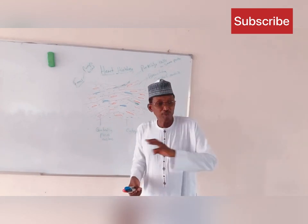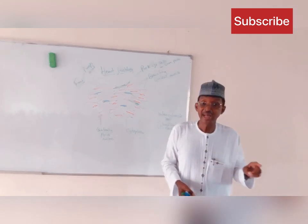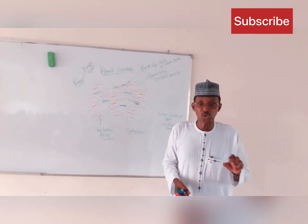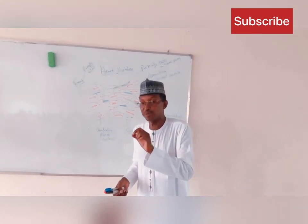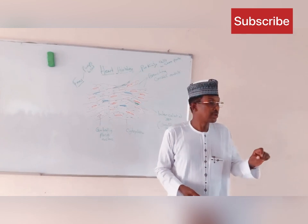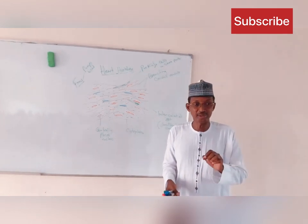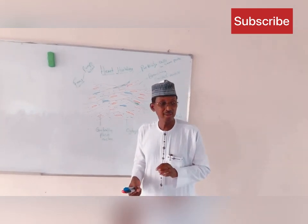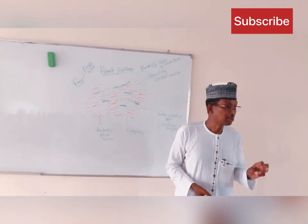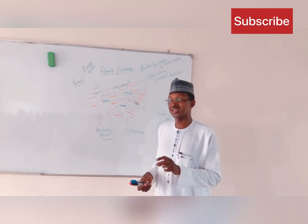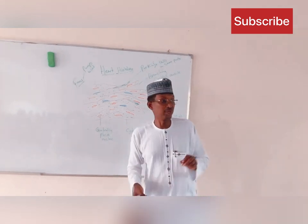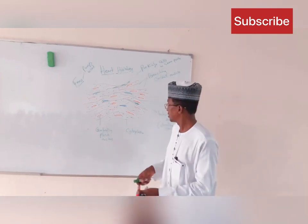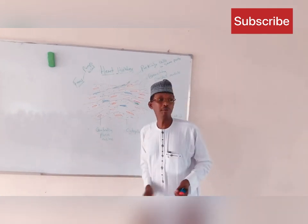Muscle tissue is made up of three types of categories: we have cardiac muscle, we have smooth muscle, and then we have skeletal muscle. So even muscle itself is made up of three categories, and one of these is the heart or cardiac muscle.